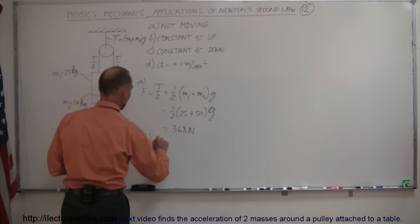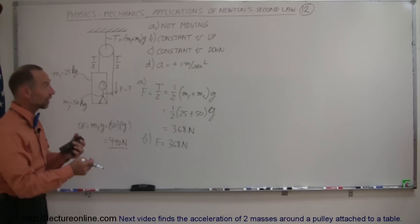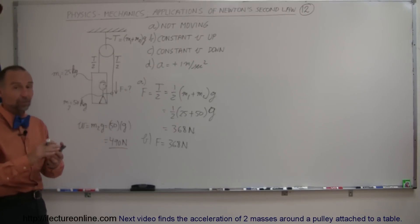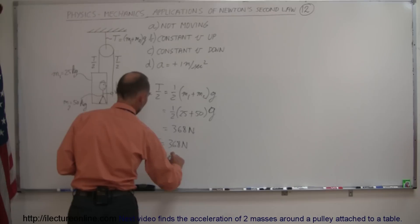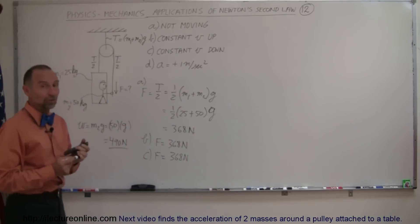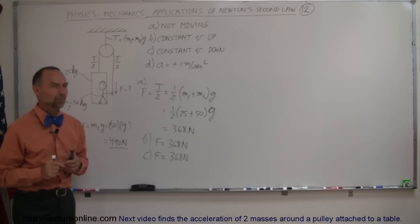So for part B, the force also would be 368 newtons. And that means then, if the person wants to let the box downward at a constant speed without acceleration, that for part C, the force is going to be also 368 newtons. So that means that the person can hold the box in place, can pull on the box and raise the box upward at a constant speed, or can let the rope and allow the box to go down at a constant speed.